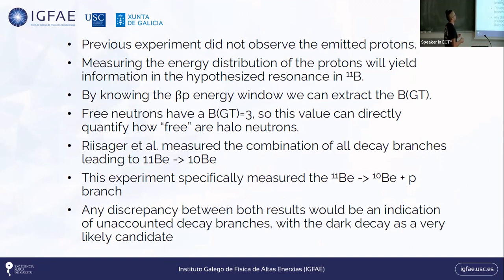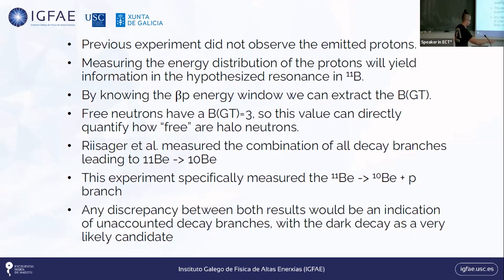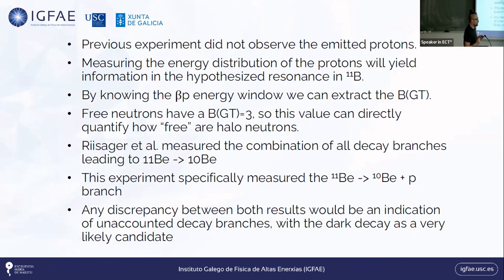Any discrepancy between the indirect and direct result gives us information regarding the exotic channel. Measuring protons is also important for extracting properties of the halo itself, in particular the BGT, which has a well-defined value for halo neutrons. However, it's very challenging because the Q-value window is almost 280 keV, meaning the protons will have very low energy, and particle identification is needed.